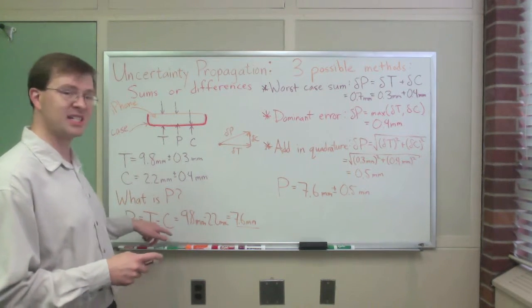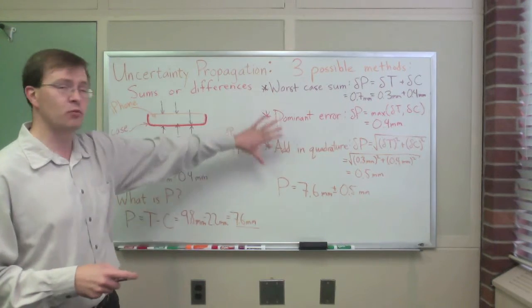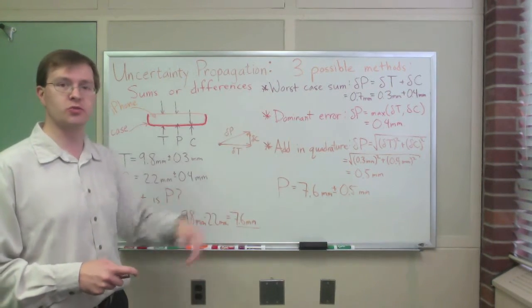So with that, that is all I have to say about propagating uncertainties through sums or differences. Again, this was a t minus c. If it had been t plus c, the same rules would apply. Any of these strategies would work.